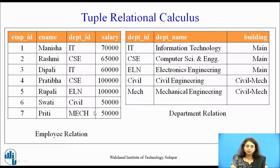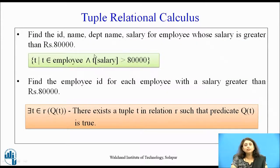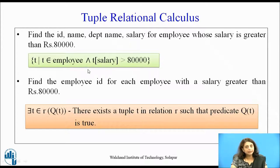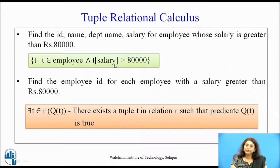We will be using two relations: the employee relation and the department relation. Consider the query to find information of employees whose salary is greater than 80,000 — finding id, name, department, and salary. The query is: {t | t ∈ employee ∧ t[salary] > 80,000}. This will list all tuples where salary is greater than 80,000.